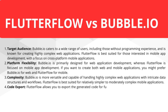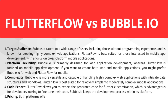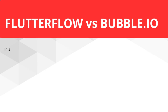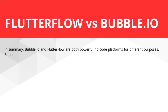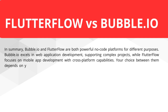Code export: Flutter Flow allows you to export the generated code for further customization, which is advantageous for developers looking to fine-tune their code, whereas Bubble keeps the development process within its platform. Pricing: Both platforms offer free plans for basic use, with pricing tiers that scale based on your project's complexity and resource requirements. In summary, Bubble and Flutter Flow are both powerful no-code platforms for different purposes. Bubble excels in web application development supporting complex projects, while Flutter Flow focuses on mobile app development with cross-platform capabilities. Your choice depends on your specific project requirements, target platforms, and comfort with no-code development.